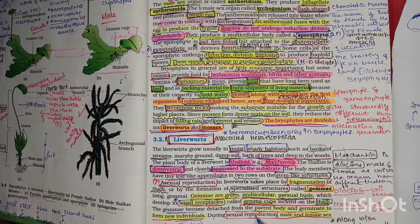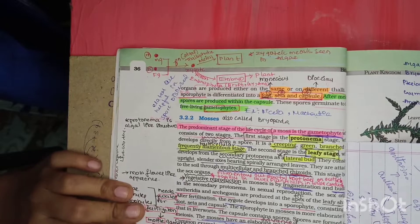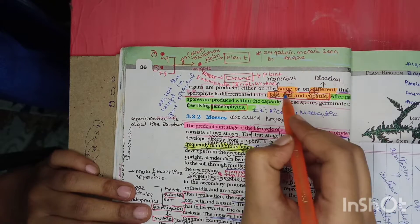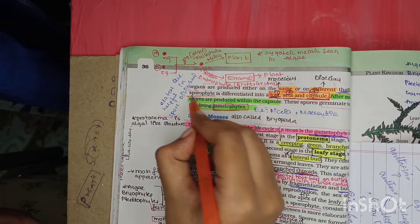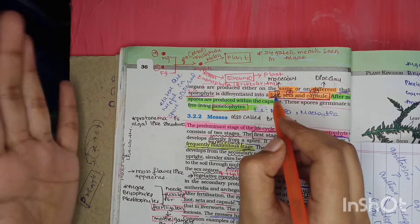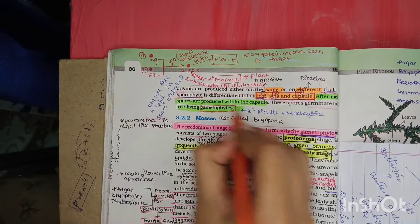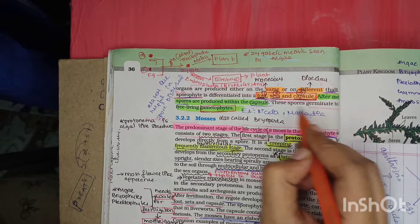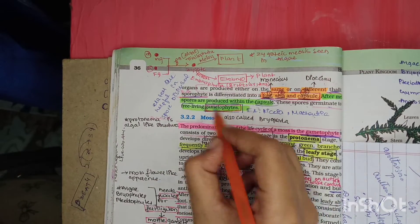In sexual reproduction, male and female sex organs are produced either on the same or on different thalli. The sporophyte is differentiated into foot, seta, and capsule. After meiosis (reduction division), spores are produced within the capsule. The spores germinate to give free-living gametophyte, which is the dominant stage of bryophytes.